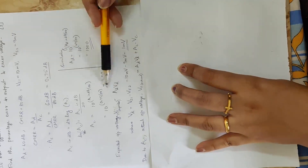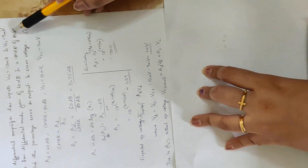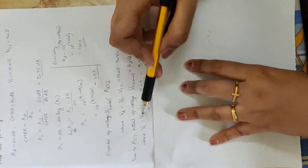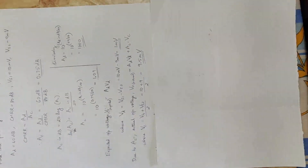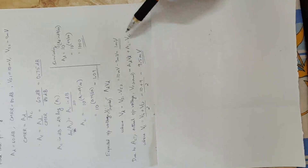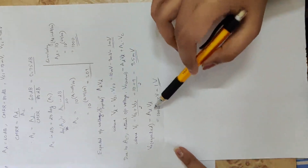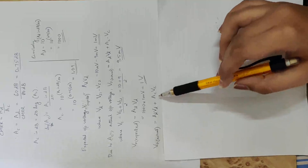The average of the two input signals is called Vc. Vc equals (VS1 plus VS2) divided by 2, which equals (10mV plus 9mV) divided by 2, giving 9.5 millivolts. The actual output voltage includes both differential and common mode components. The expected output voltage equals Ad times Vd, which is approximately 1V.